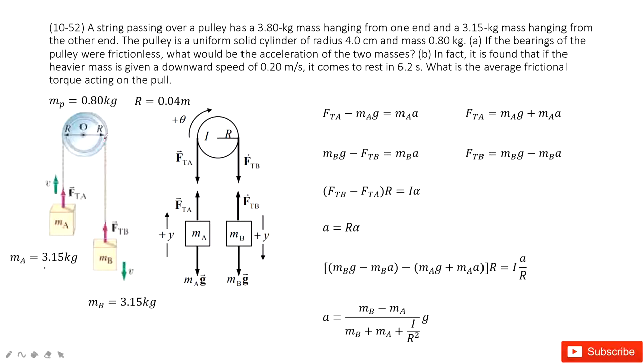At this one, you can see we have Atwood machine, right? And it has object A and object B. The mass of each one is given, and the pulley, the mass is given, and the radius is given. The first one, we need to find the linear acceleration for this system.